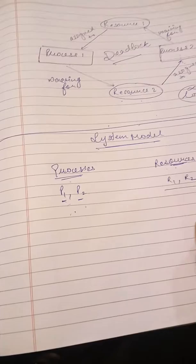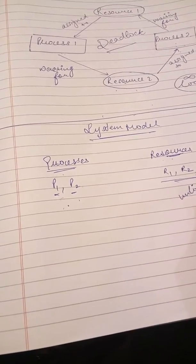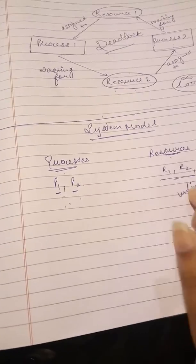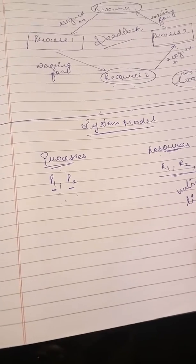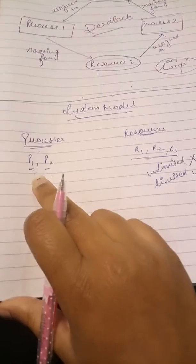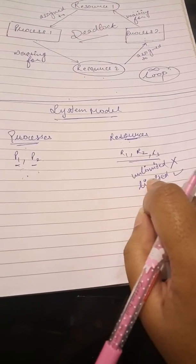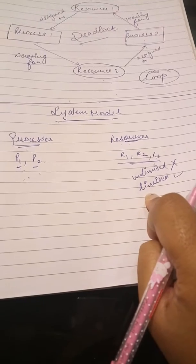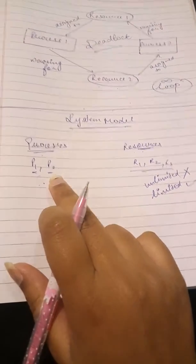These resources are not unlimited, these are limited resources. Because if the resources were unlimited then there would have been no problem, no situation of deadlock. But the resources are limited and we cannot have so many resources to give them to all.